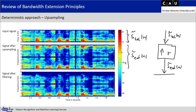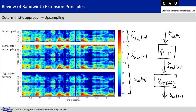We filter the signal s̃_ext(n) with an anti-imaging filter H_AI(e^{jω}). This filter applies a basic attenuation to the higher frequency part we added. From 0 to 4 kHz the filter coefficients are 1, and afterwards the response declines with increasing frequency. This gives us our extended output signal s_ext(n).